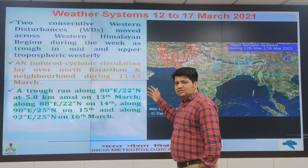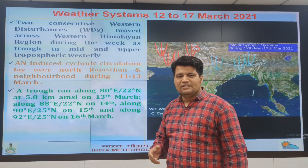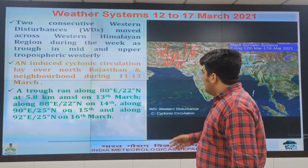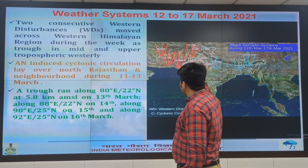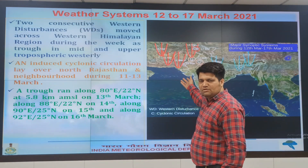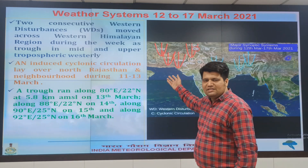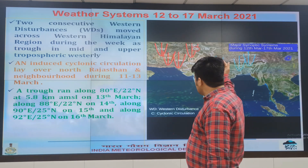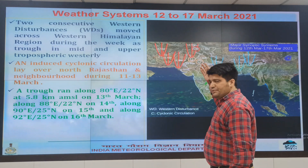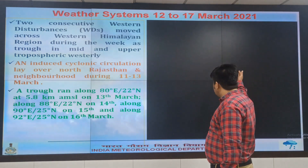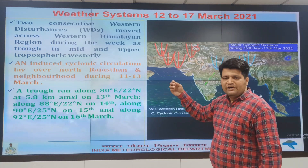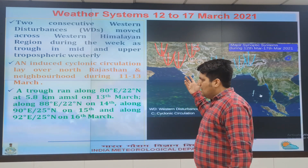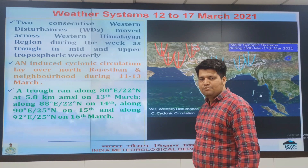During the 11th to 13th March period, isolated hailstorm activity was also observed over Punjab, Haryana, Rajasthan and Madhya Pradesh. Along with this Western disturbance, there was also an induced cyclonic circulation over Rajasthan. As we know, whenever there is a Western disturbance, it moves eastward and its remnants cause weather over Northeast India. So during 11th to 15th March, there was fairly widespread rainfall over Arunachal Pradesh and isolated to scattered rainfall over Assam, Meghalaya, Nagaland, Manipur, Mizoram and Tripura.